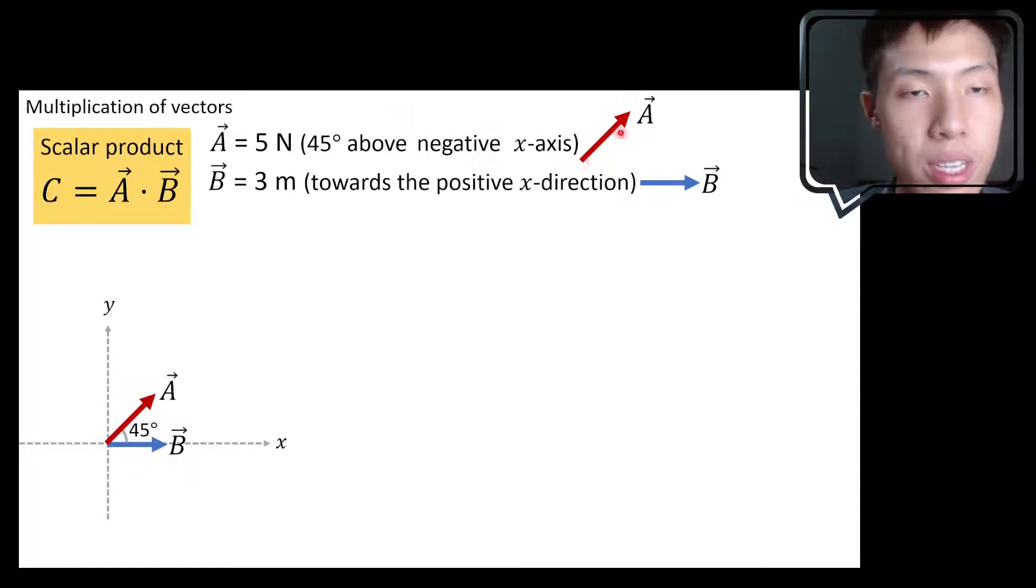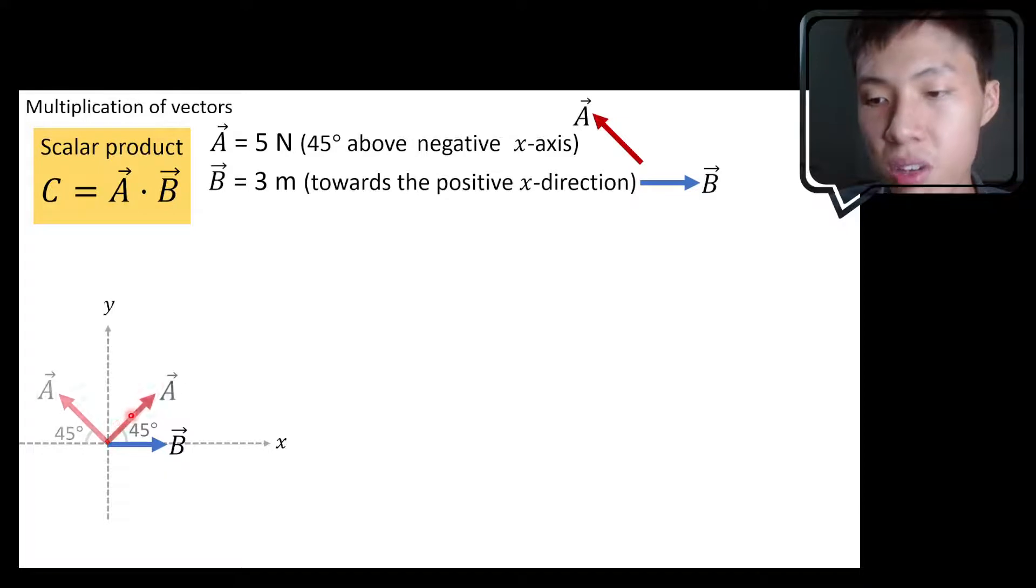So instead of pointing in this direction, above negative x-axis will now be in this direction. So of course I have to replace this vector A here with a new vector A, which is pointing at this angle over here. Again I label my 45 degrees here because this is 45 degrees above negative x-axis.